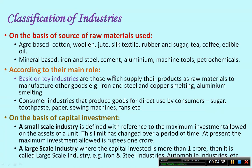According to their main role, industries are classified into basic or key industries and consumer industries. Basic or key industries supply their production as raw materials to manufacture other goods — examples are iron and steel, copper smelting, and aluminum smelting. Consumer industries produce goods for direct use by consumers — ready-to-use items like sugar, toothpaste, paper, sewing machines, and fans.